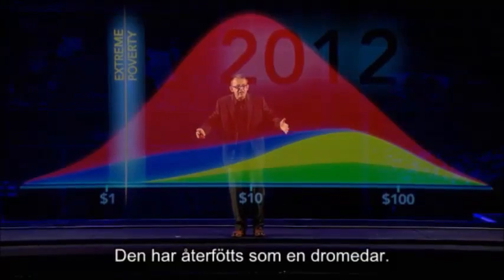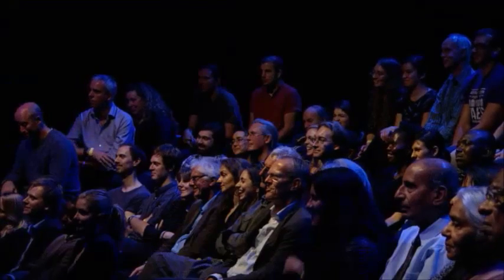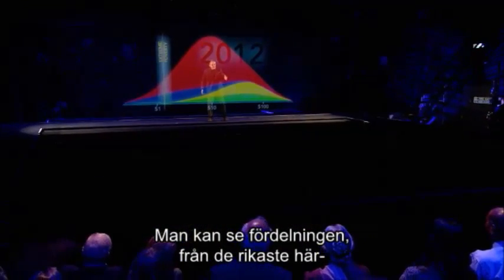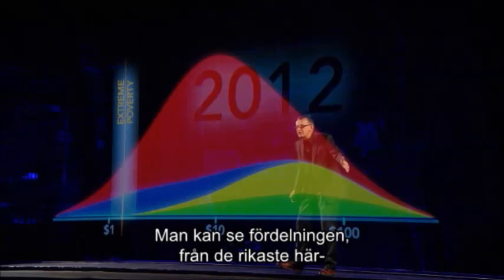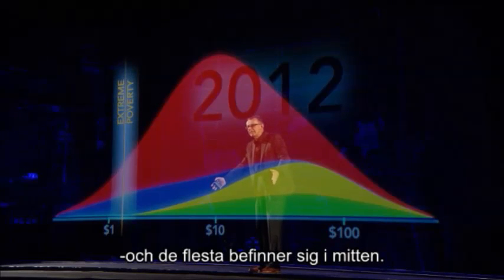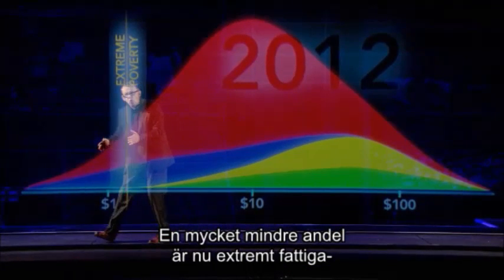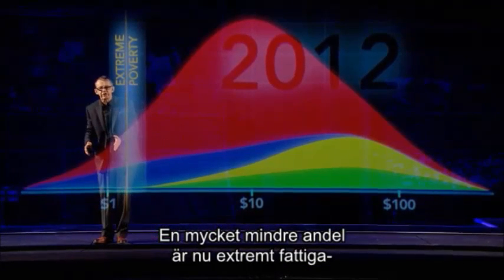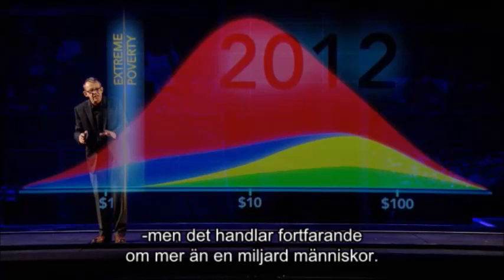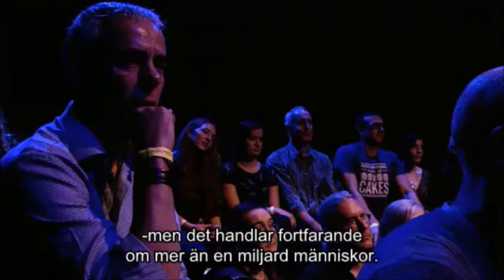It's reborn as a dromedary. What you can see now is the variation from the richest, with most people in the middle, and a much smaller proportion of the world in extreme poverty. But be careful — it's still a lot of people, more than one billion people still in extreme poverty.